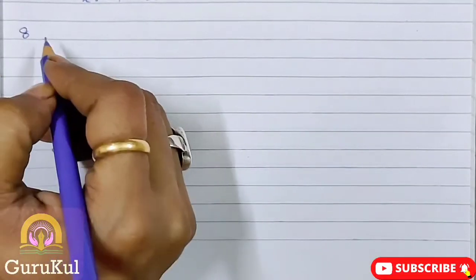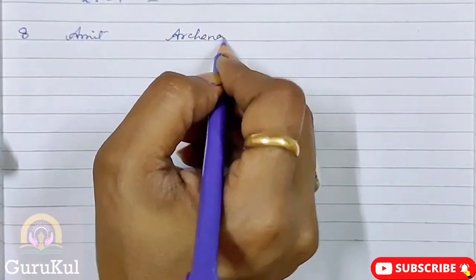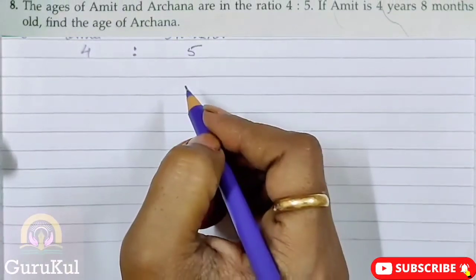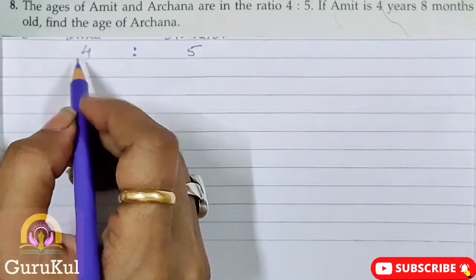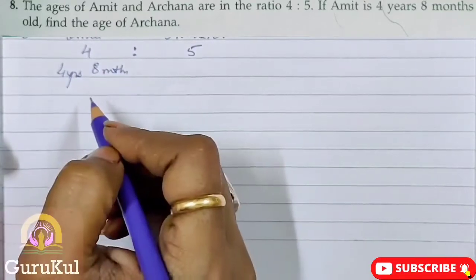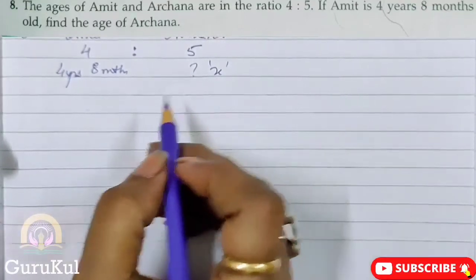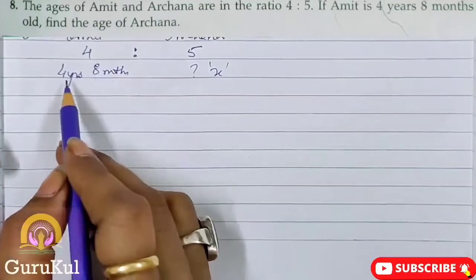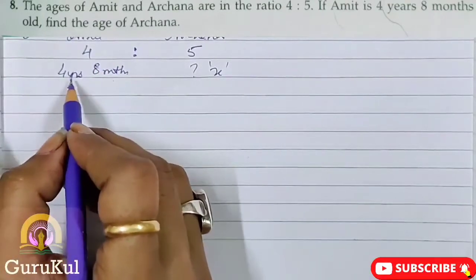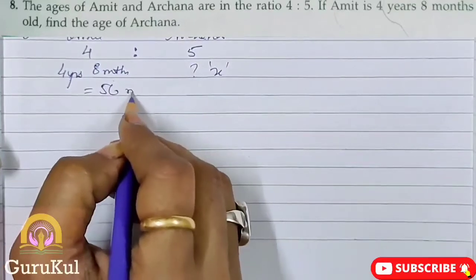Question number 8. The ages of Amit and Archana are in the ratio 4 is to 5. Now it is given that Amit is 4 years 8 months old. So what is the age of Archana? So we take that as X. Now what will we do? This is in years and months, so we will convert it completely into months. So 4 years becomes 48 months. 48 plus 8 will give us 56 months.